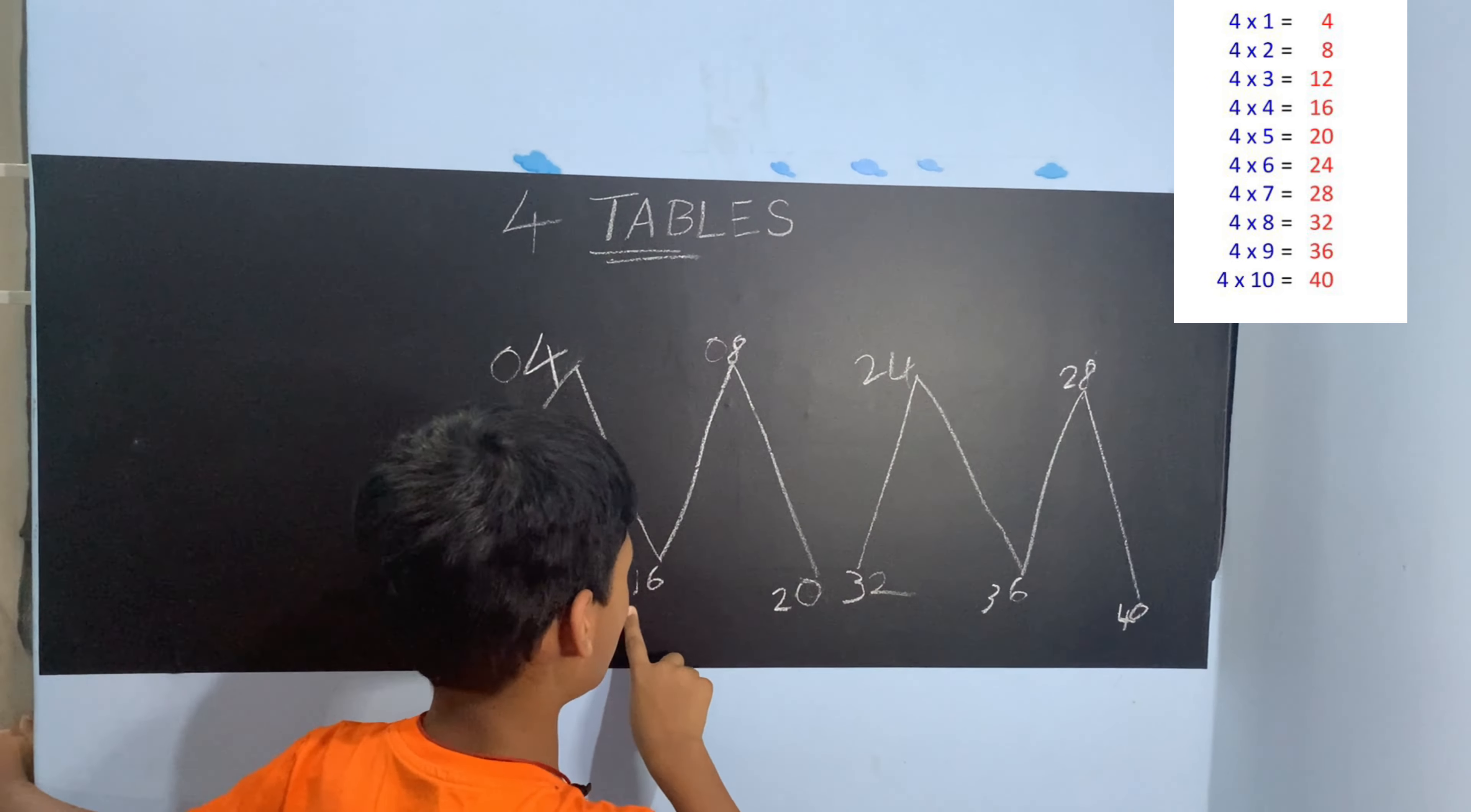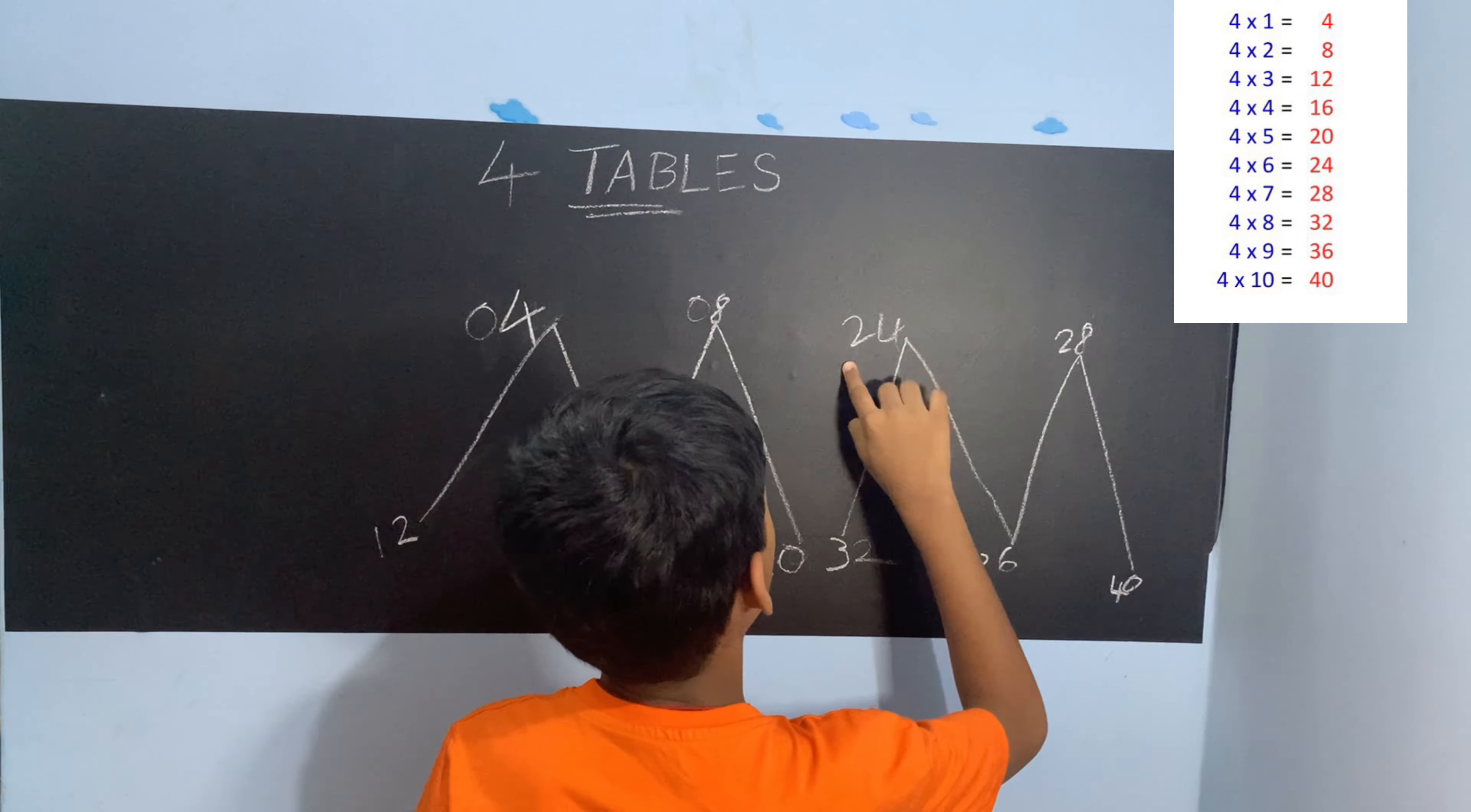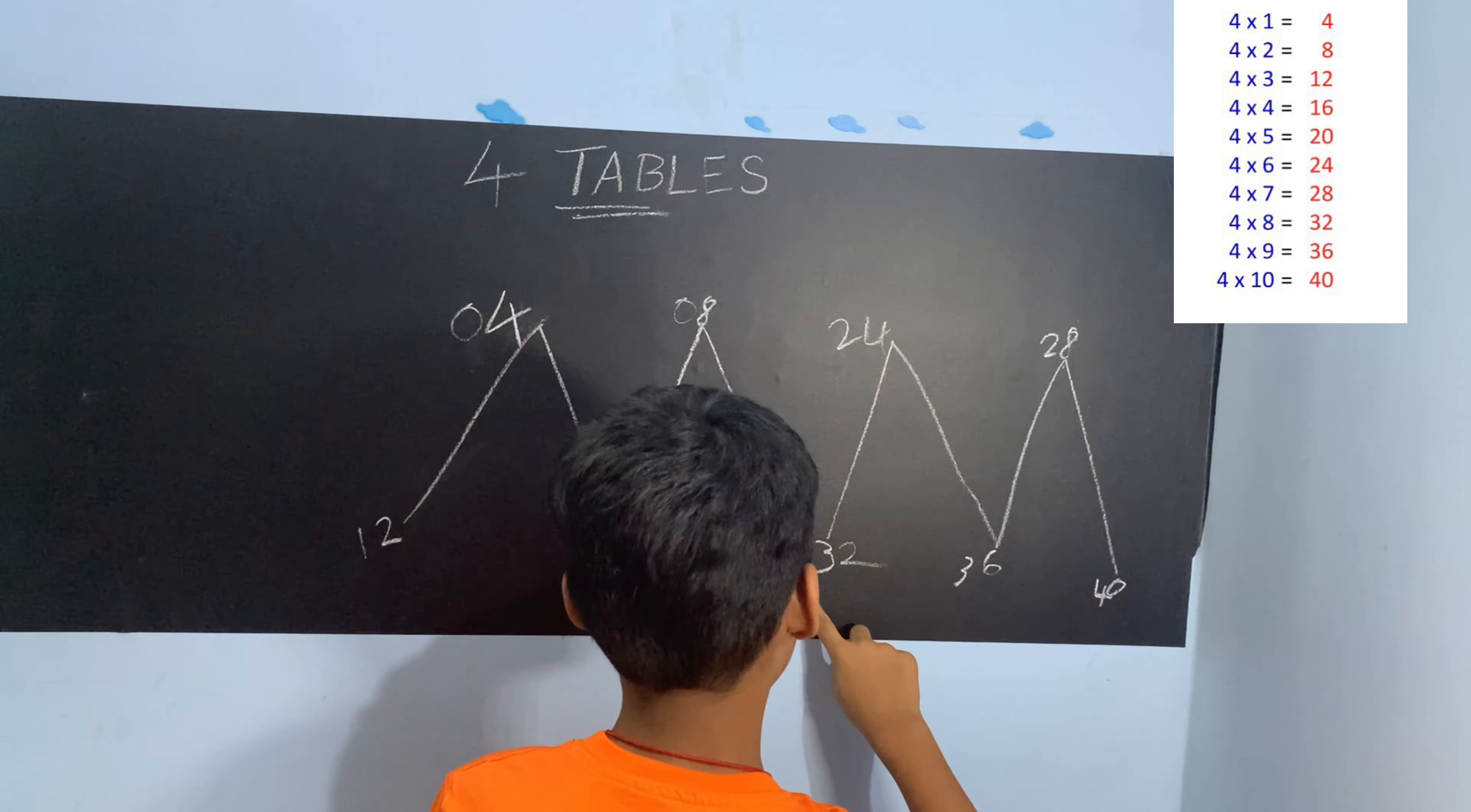One times four is 4. Two times four is 8. Three times four is 12. Four times four is 16. Five times four is 20. Six times four is 24. Seven times four is 28. Eight times four is 32.